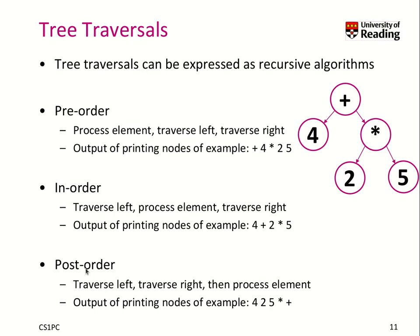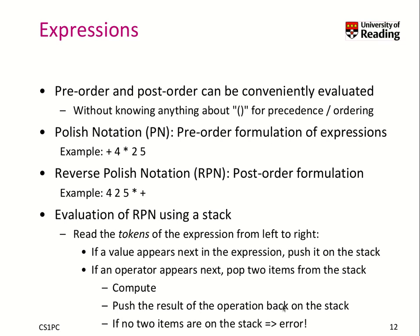Lastly, we have post-order. We traverse left, then we traverse right, and at last we process the current element. That leads to: four, two, five, times, plus. Pre-order and post-order can be evaluated by the computer without knowing anything about brackets, precedence, or ordering. They are called Polish notation for pre-order, and reverse Polish notation for post-order.